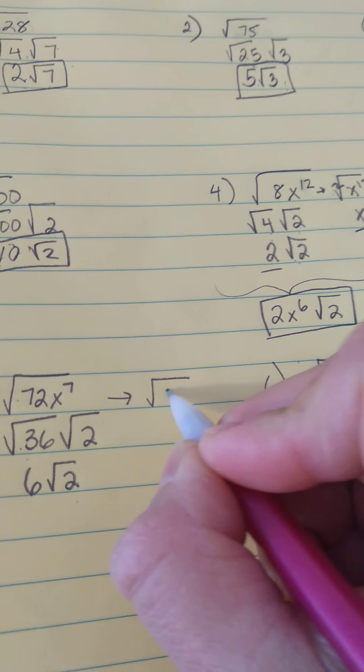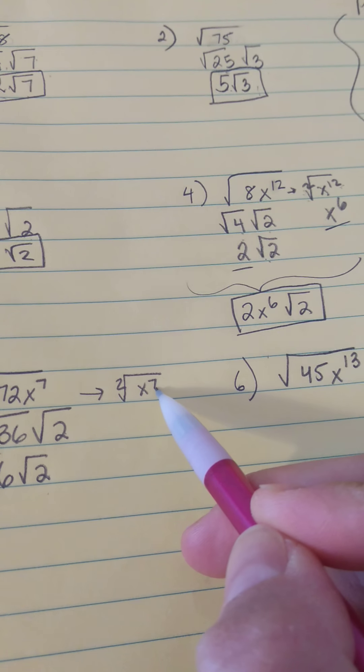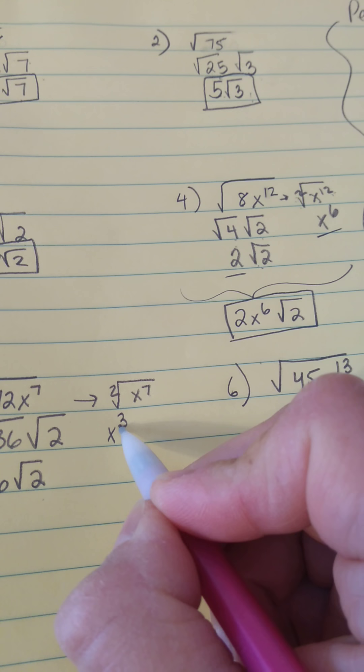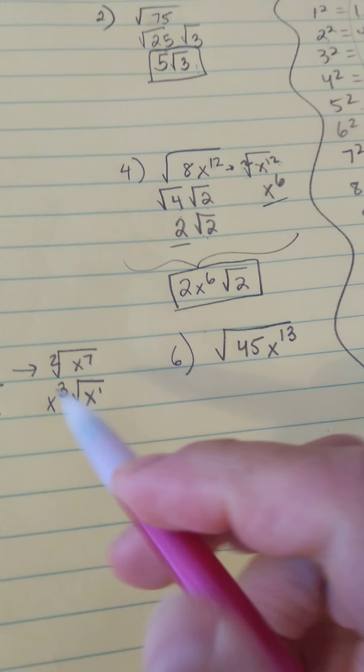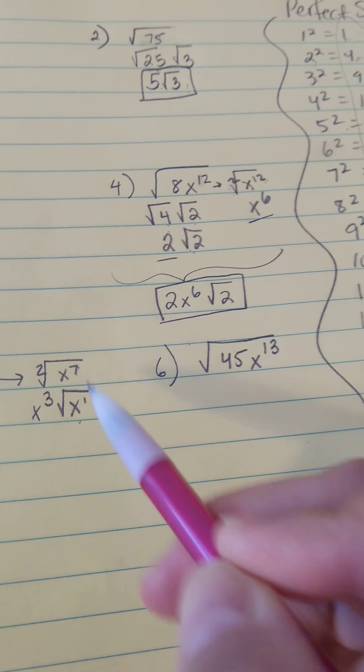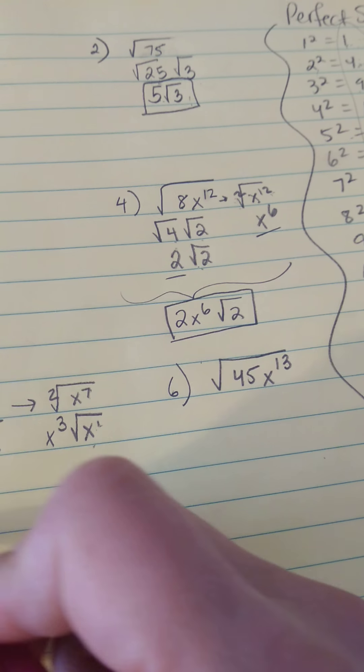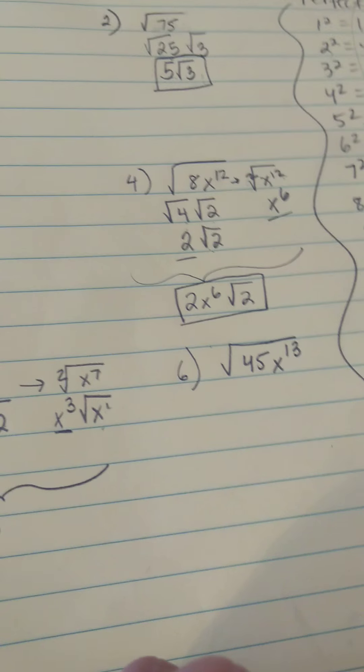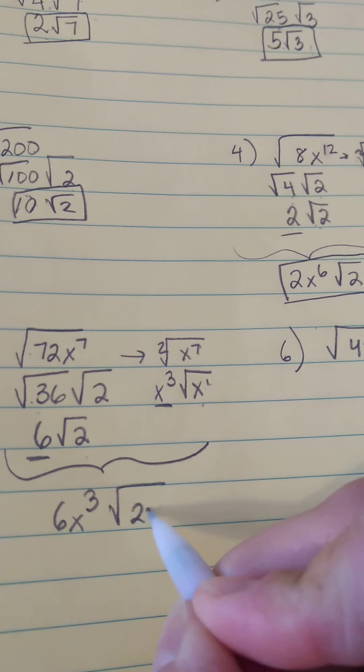Then deal with the square root of x to the 7th. That's a 2. 2 divides into 7 three times, so that becomes x to the 3rd, and there's a remainder of 1. Remember the trick. It's always going to be x to the 1st under the radical. We're dealing with square roots, so if you have an odd number here, it's going to be x to the 1st. So the guys on the outside go together on the outside, and then the guys under the radicals go together under the radical.